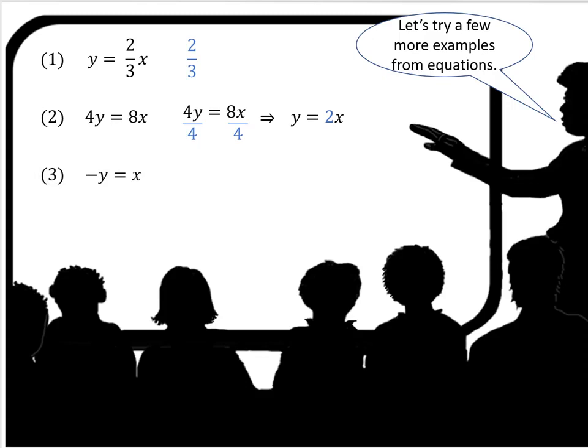Negative y equals x. Again, we're going to need to put it in the correct format. So we would divide both sides by negative 1, and we come up with y equals negative 1x. You would probably see it as negative x, which would indicate there is a negative 1 in that k position.